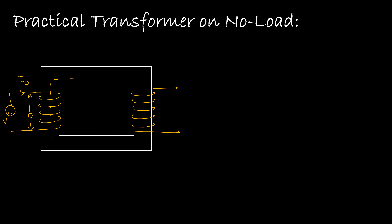This flux is going to link up with the secondary winding through the core. Let us assume this flux as phi. According to Faraday's law, we observe one more EMF on the secondary side. As there is no load, the secondary current I2 is zero. If a load were connected, the voltage across the load would be the terminal voltage, which we may equate to the secondary induced EMF, E2.